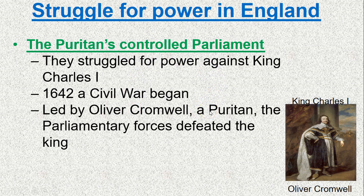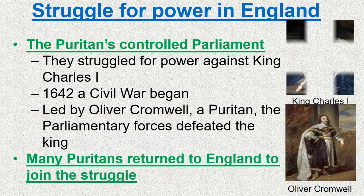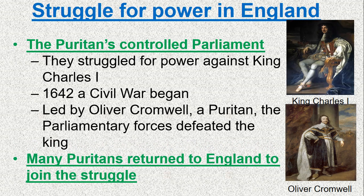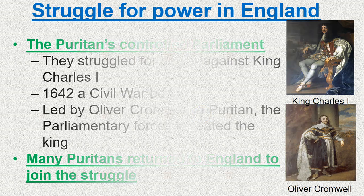Some colonists actually went back to fight and helped Oliver Cromwell become leader. He was in charge for about seven or eight years before he was executed for being intense, crazy, violent, and brutal. The monarchy eventually got restored a number of years later.